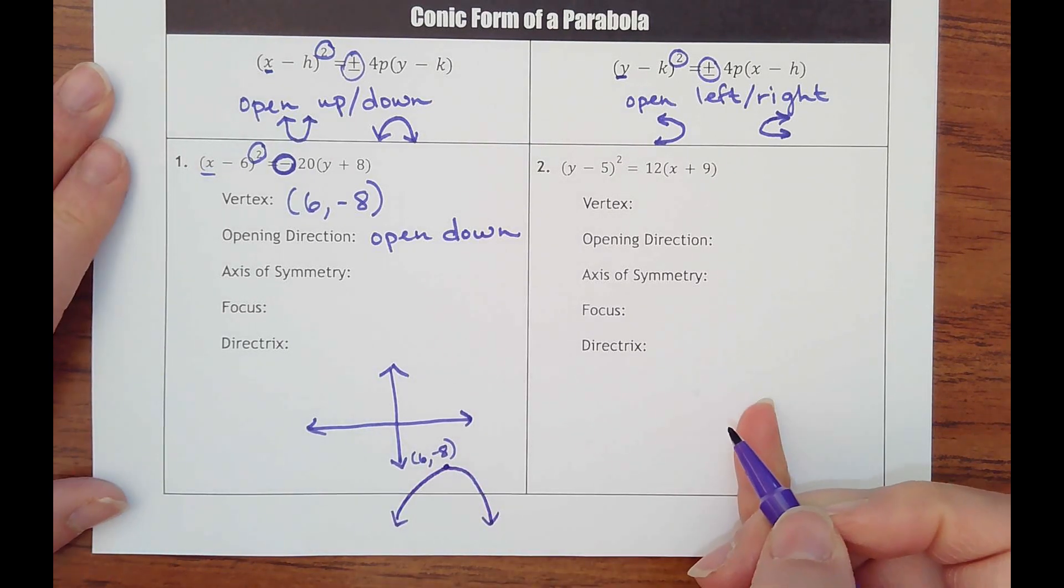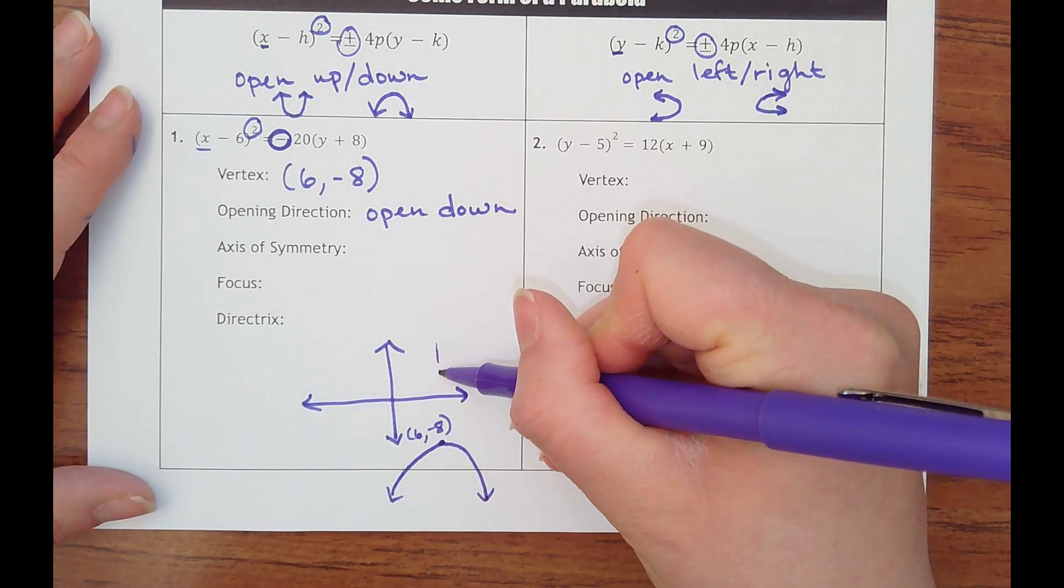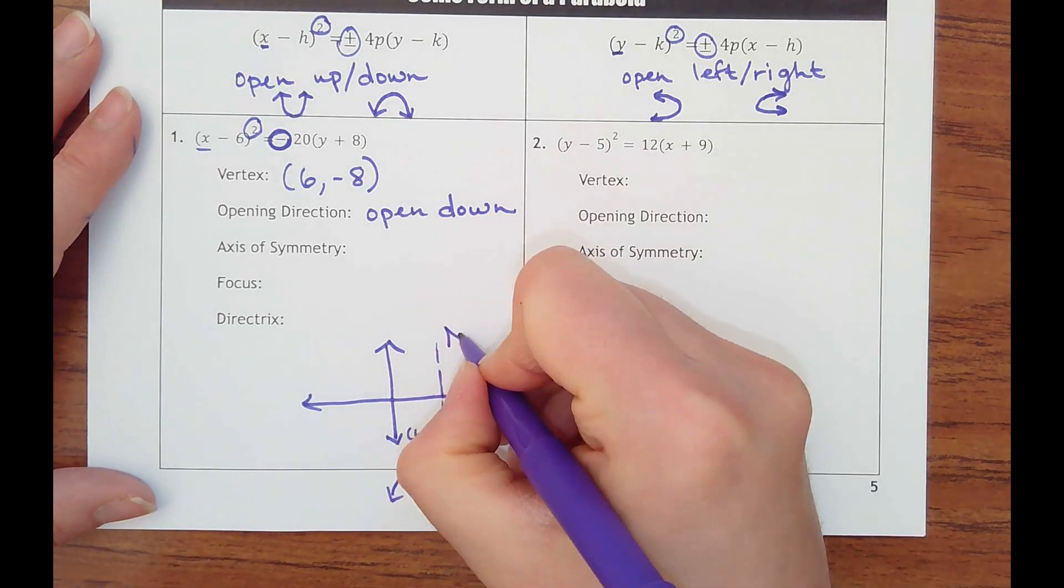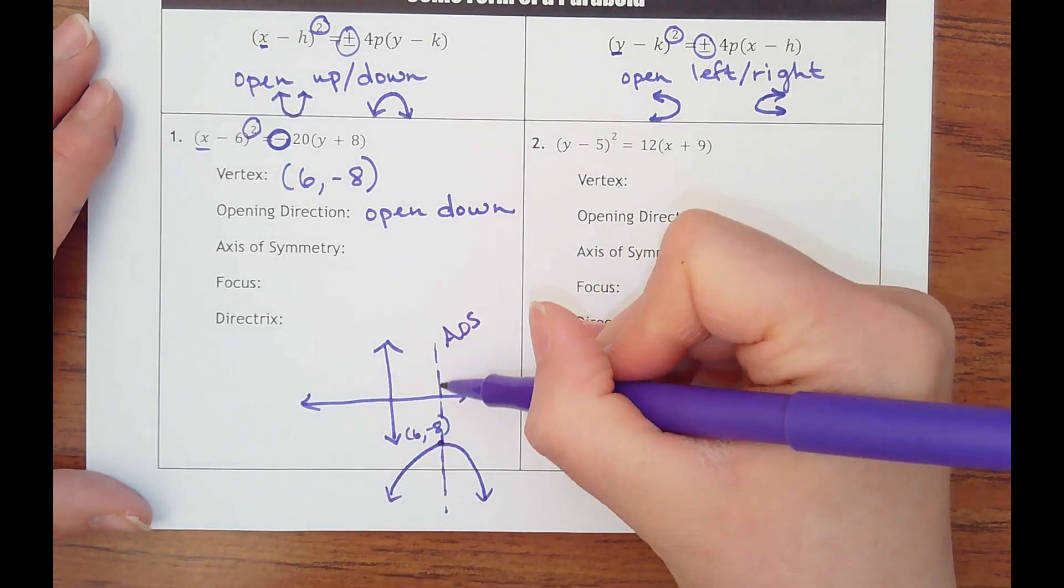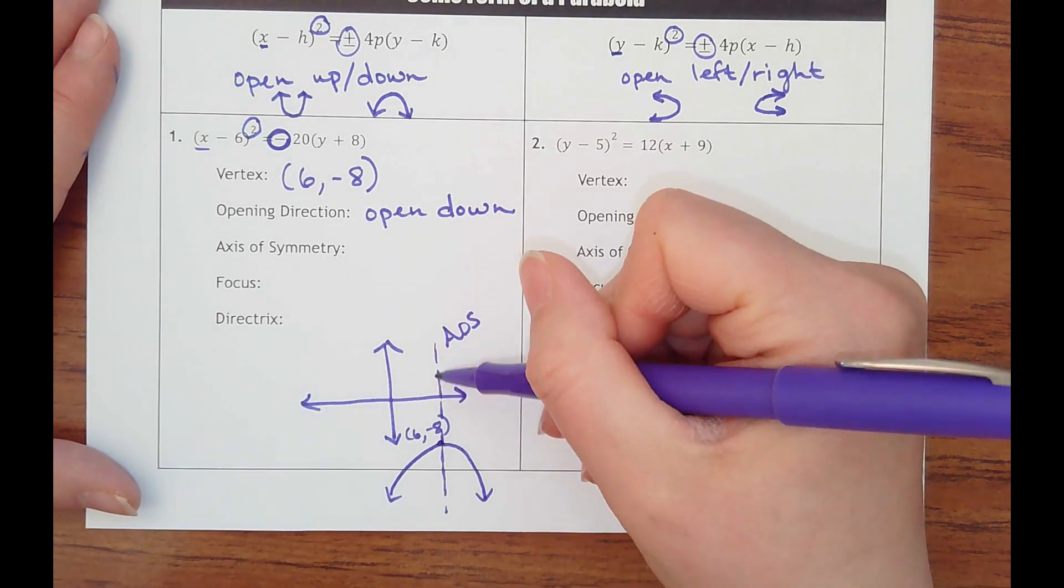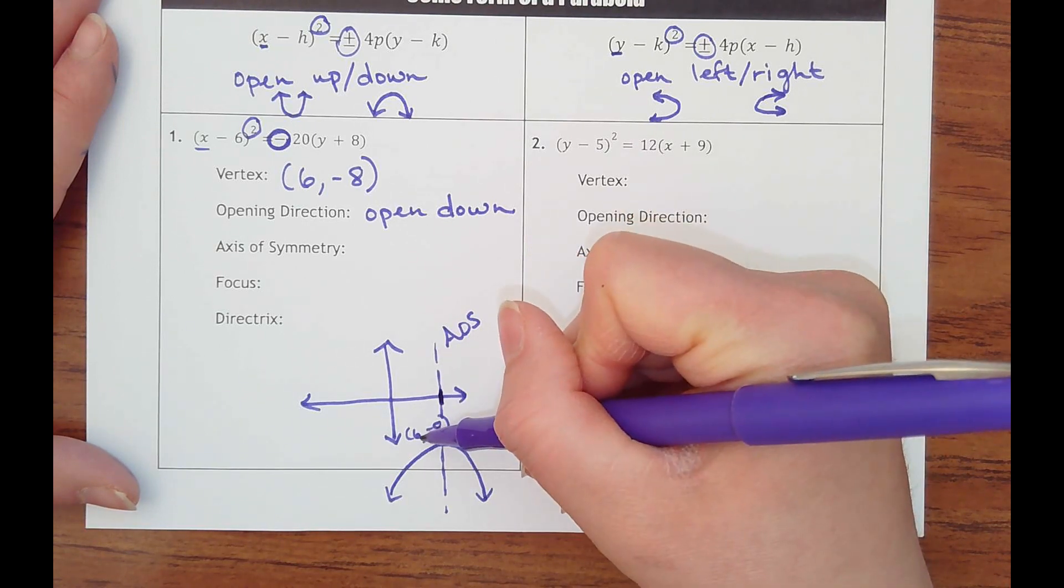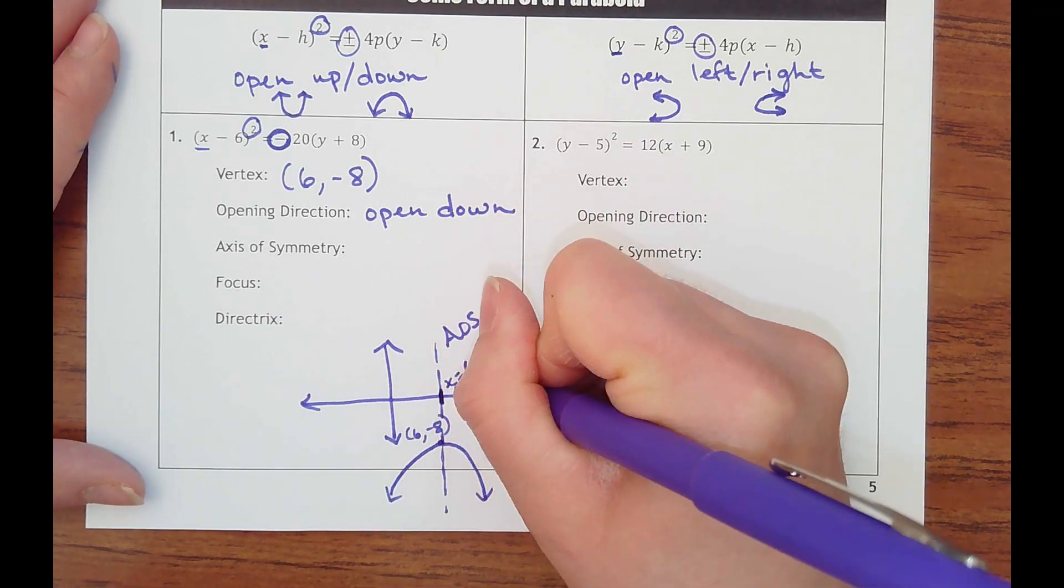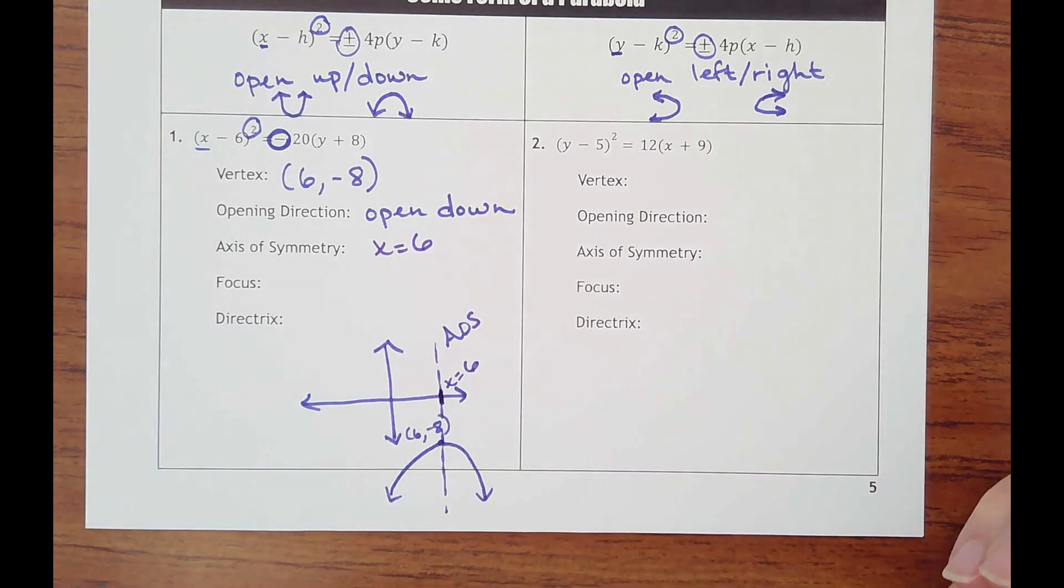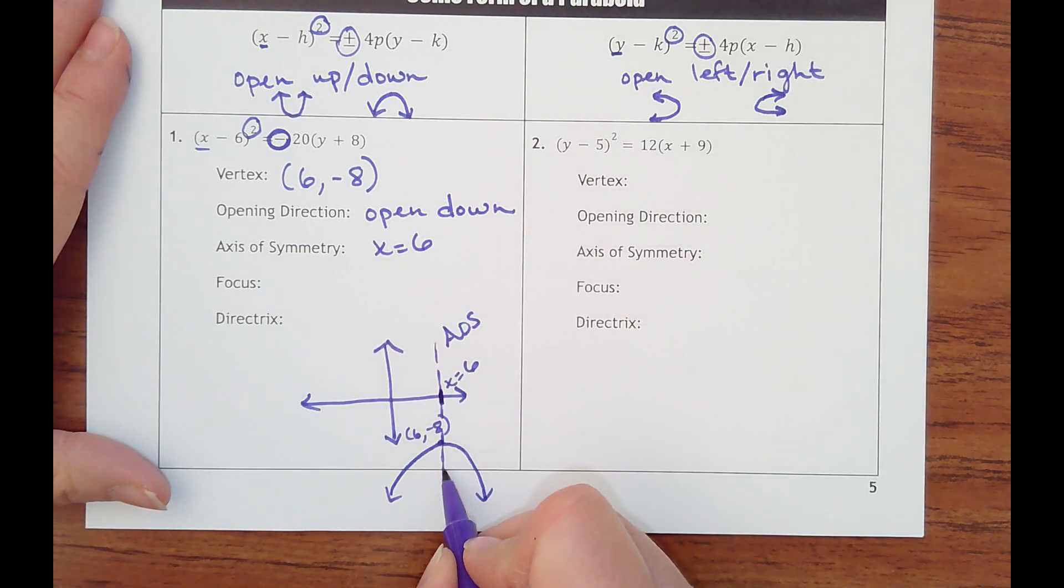The axis of symmetry is something we've talked about before with quadratics. It is the imaginary line that would cut the parabola in half, where you could fold it over that line and it would match. In this case, it's going to be a vertical line through the vertex. It's going to cut through wherever the vertex's x coordinate is, at x is 6. So I almost always have to sketch a picture.